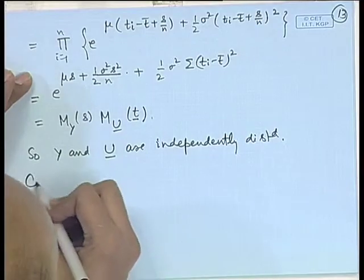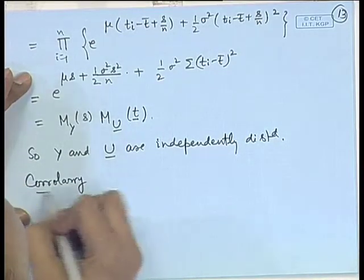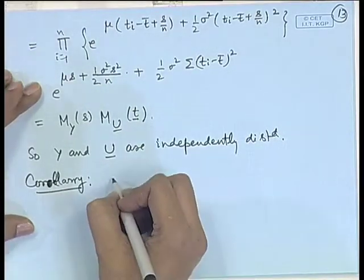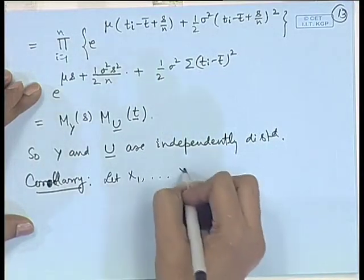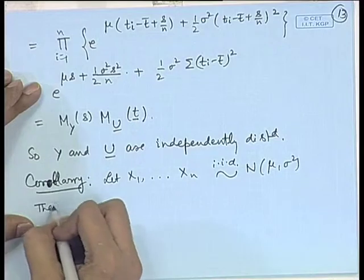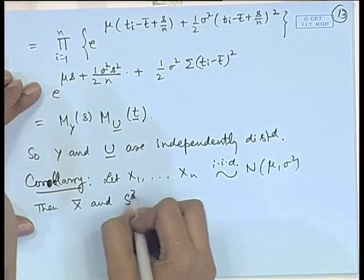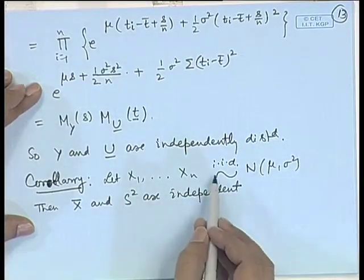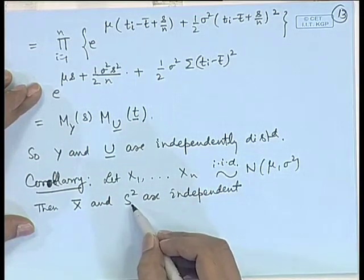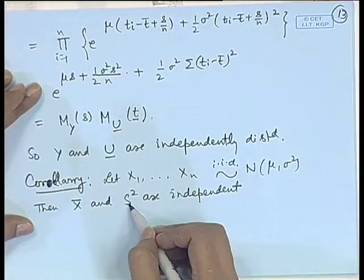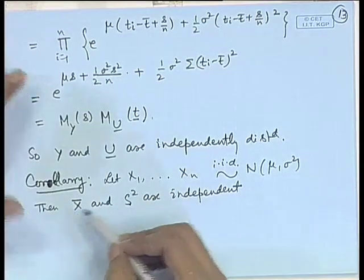As a consequence we have the following corollary: let X₁, X₂, ..., X_n be a random sample from N(μ, σ²), then x̄ and s² are independent. That is, in random sampling from a normal distribution, the sample mean and sample variance are independently distributed. The proof follows immediately since s² is a function of u, so since x̄ and u are independent, x̄ and s² are also independent.